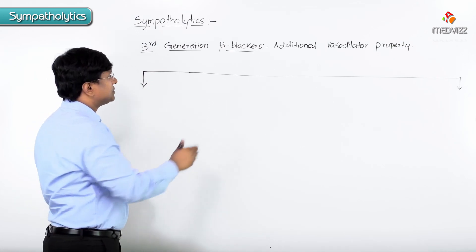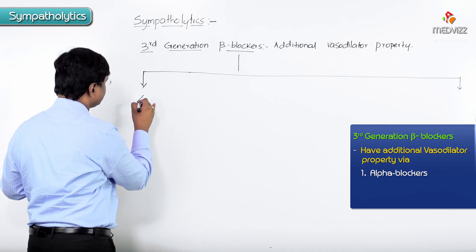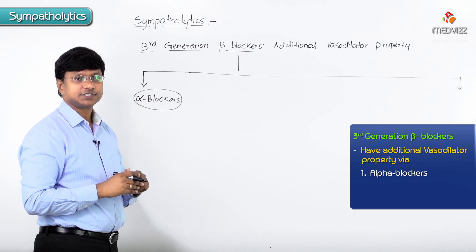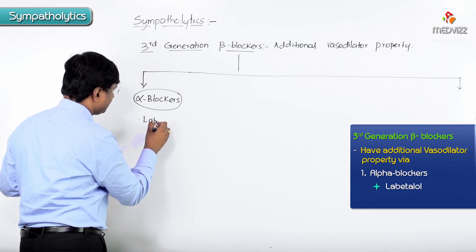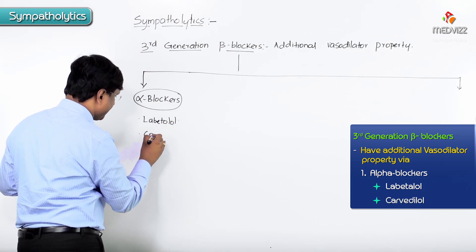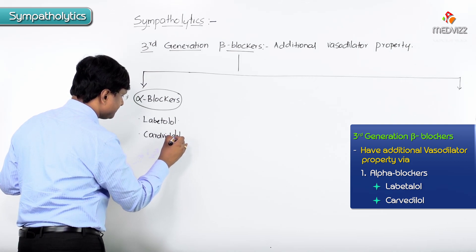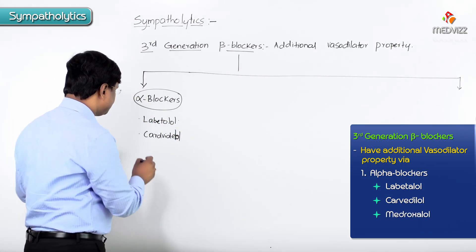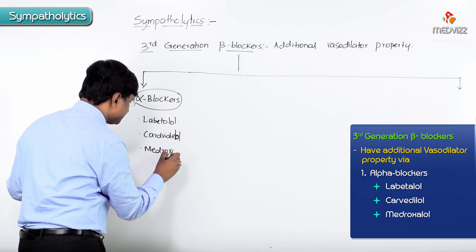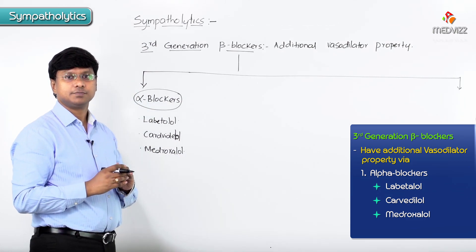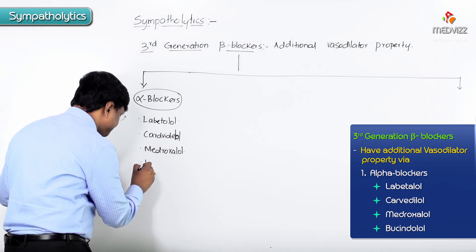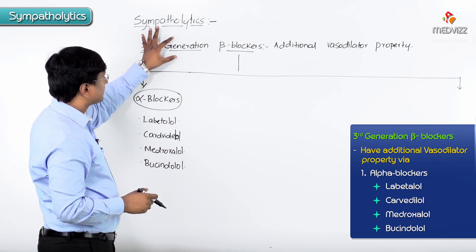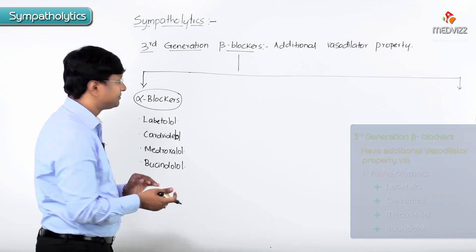The first group of third generation beta blockers are the alpha blockers. The examples here are labetalol, carvedilol, medroxalol, which has alpha blocking property, and bucindolol. These are the third generation beta blockers with alpha blocking activity.